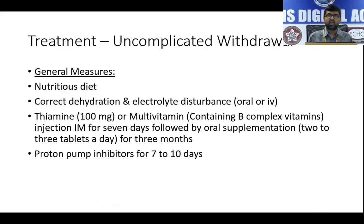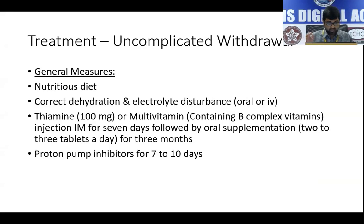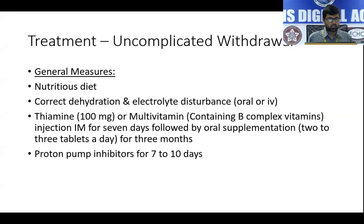For uncomplicated withdrawal, there are general and specific measures. General measures include ensuring an adequate diet, correcting dehydration and electrolyte disturbances, and giving thiamine 100 mg or a multivitamin containing B complex vitamins — thiamine should be given intramuscularly for seven days once daily, followed by oral supplementation of two to three tablets of a multivitamin for three months. Proton pump inhibitors can also be used for seven to ten days.